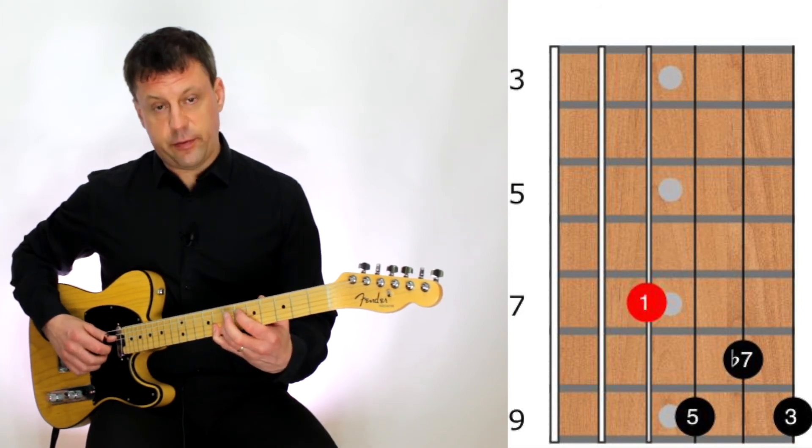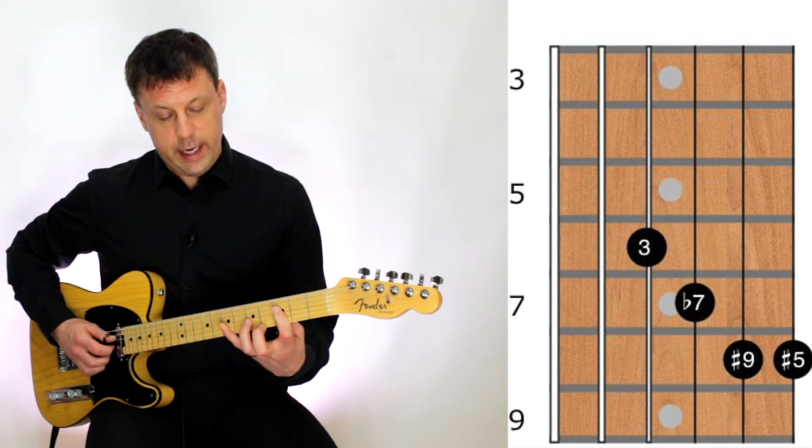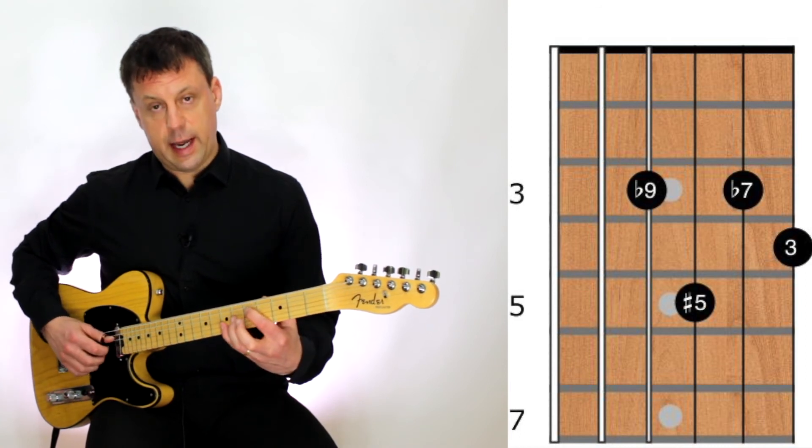Then E dominant 7 with a sharp 5 and a sharp 9, followed by E dominant 7 with a sharp 5 and a flat 9. Finishing on our A13.